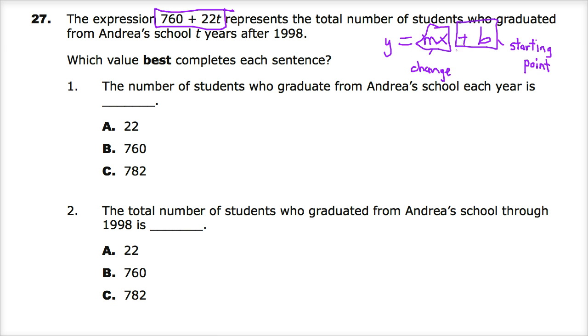So, we're going to go back and look at this. In our equation, you'll notice that the X and the T are related in some way. So, the part that represents change would be 22T, whereas the starting point would be 760. And this is all based off 1998. So, our time stamp starting point is 1998.